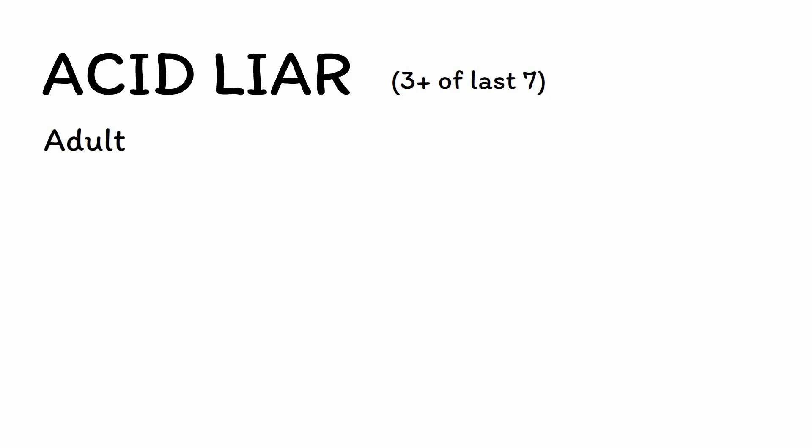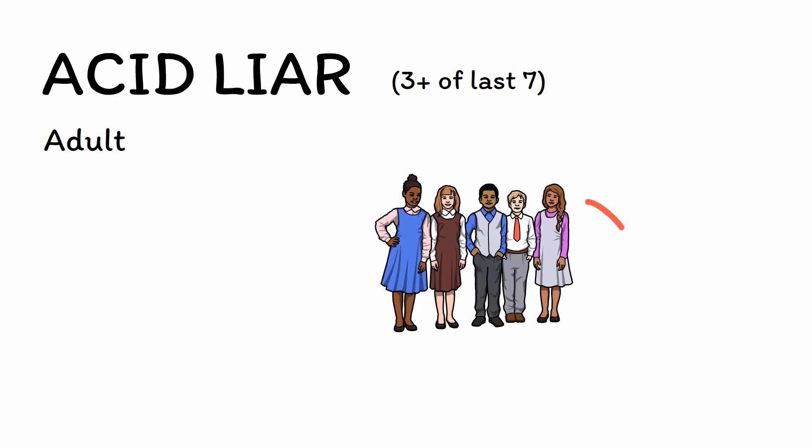First, A is for adult. By definition, ASPD cannot be diagnosed before the age of 18. However, the pattern of antisocial behavior must have started by the age of 15, if not even earlier. In this way, ASPD is a diagnosis that begins in childhood, even if it cannot be diagnosed until the patient is an adult.